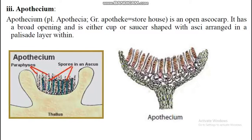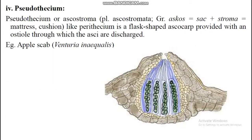Pseudothecium: similar to a perithecium but it is an ascostroma. The asci are arranged in a defense layer. The pseudothecium is like a perithecium in being flask-shaped with an ostiole through which the asci are discharged. Found in apple scab.